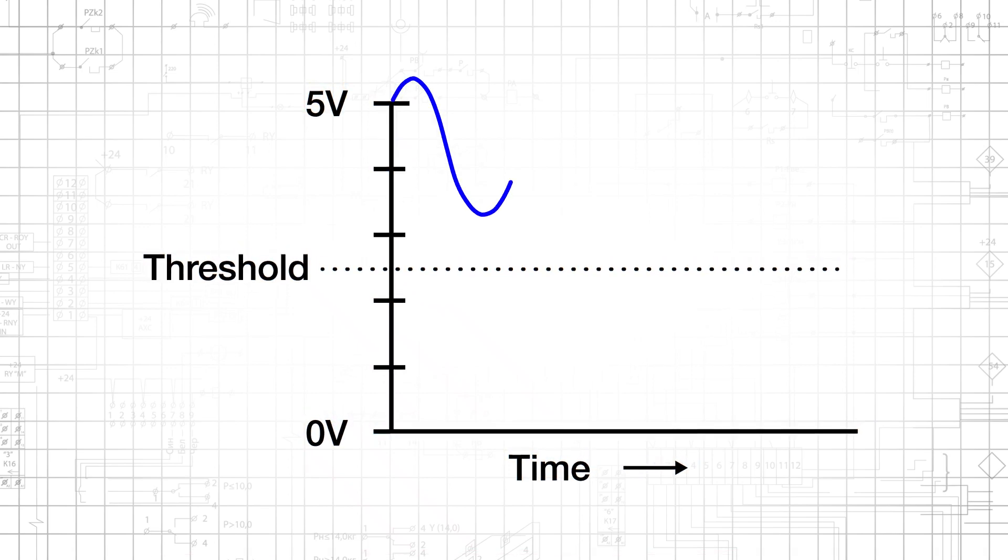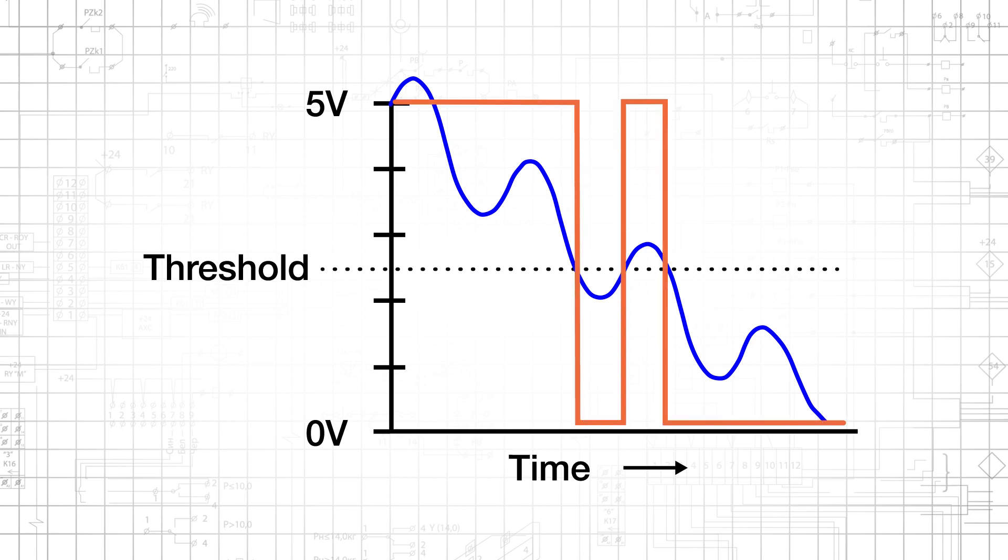The open-loop comparator topology discussed thus far has a serious limitation. Noise will cause the op-amp to produce spurious output transitions when Vdiff is near 0 volts.